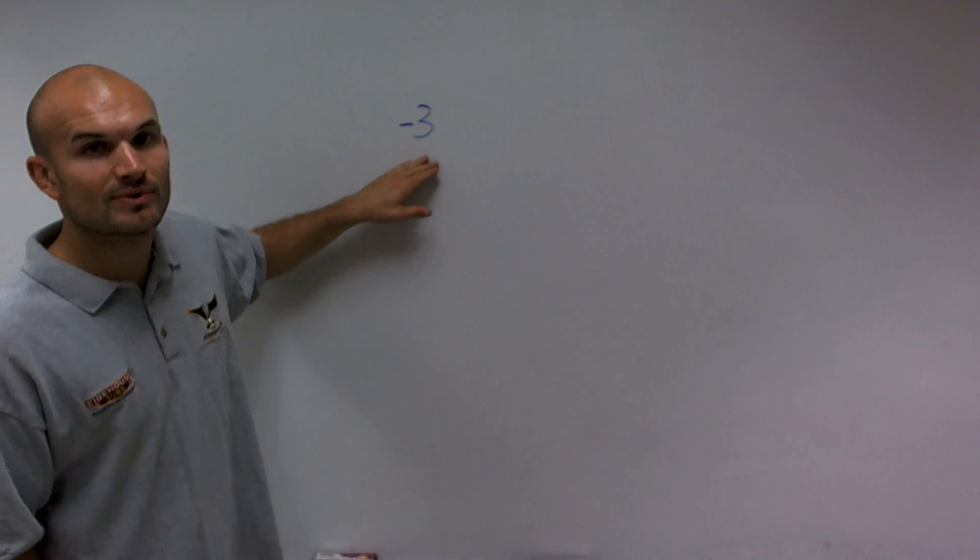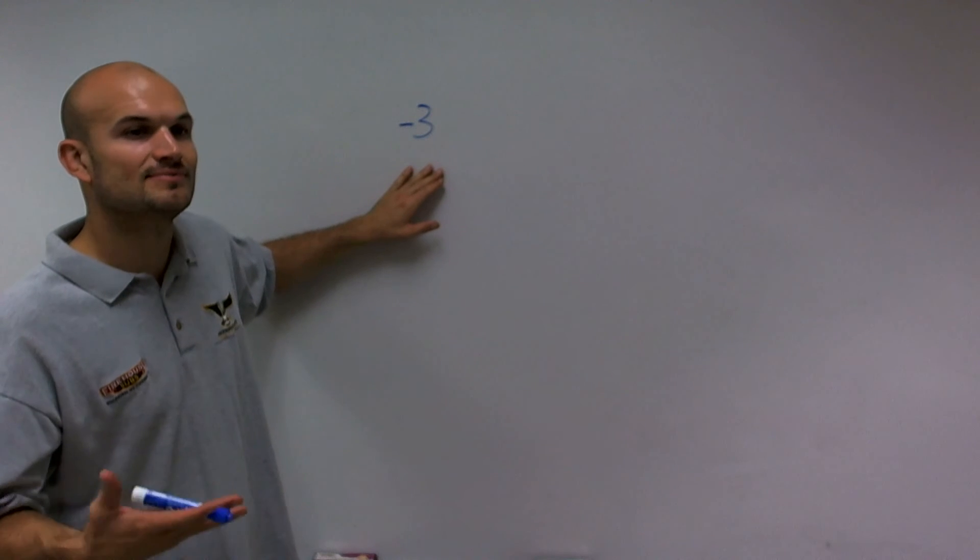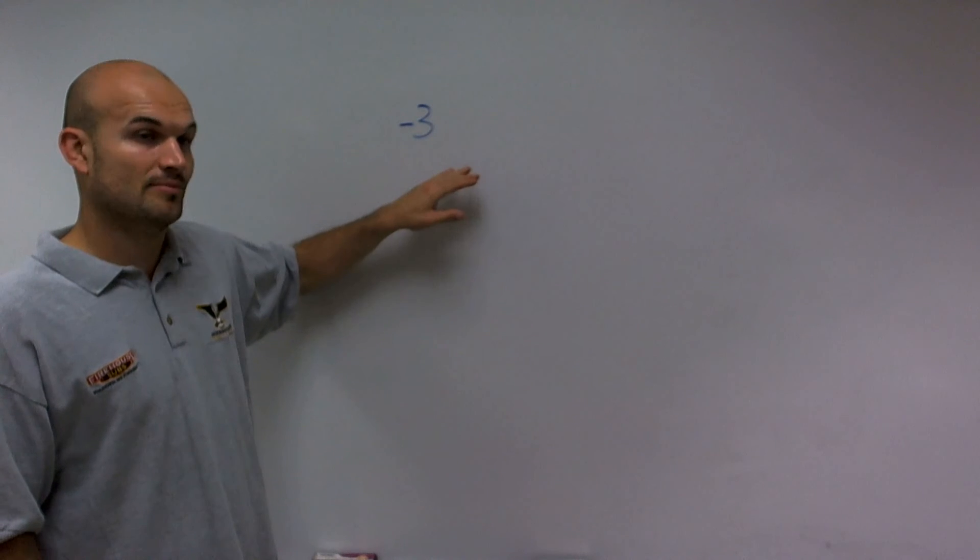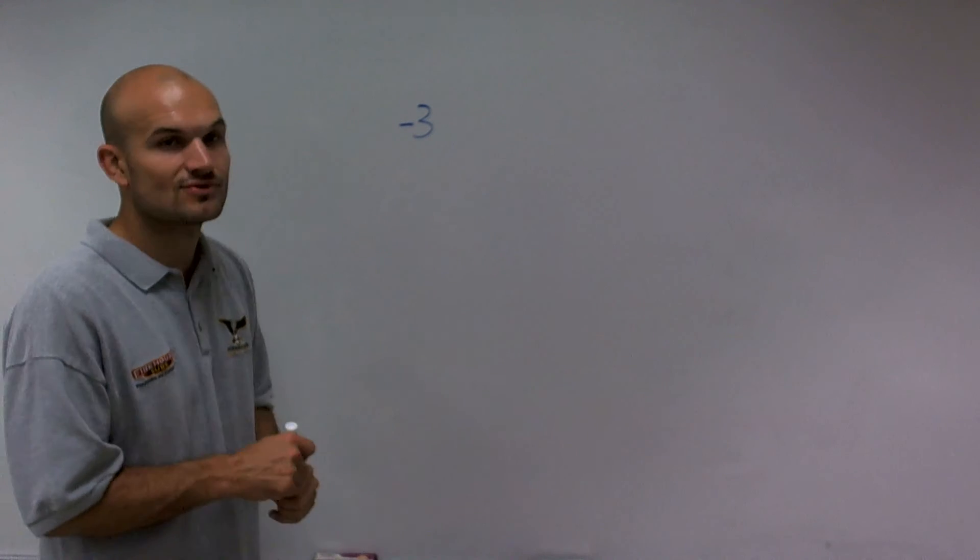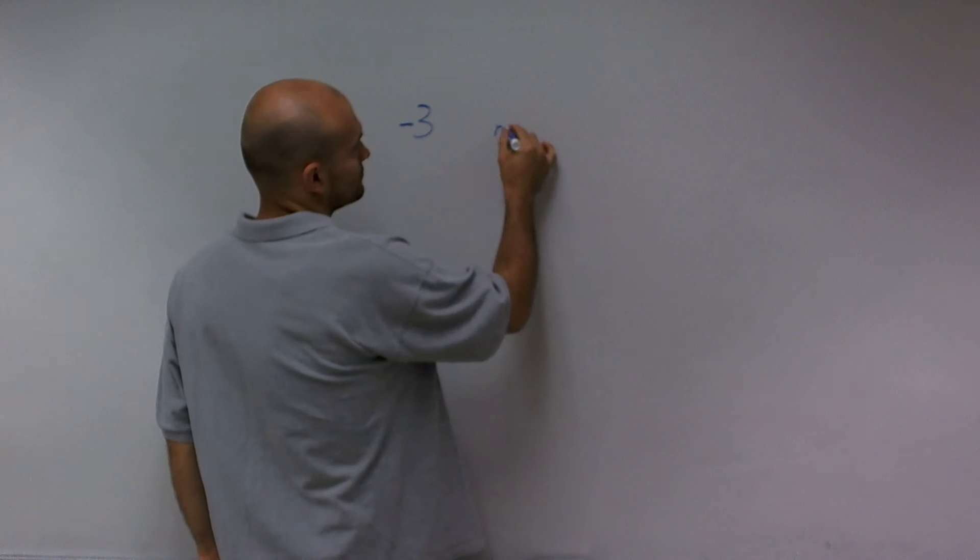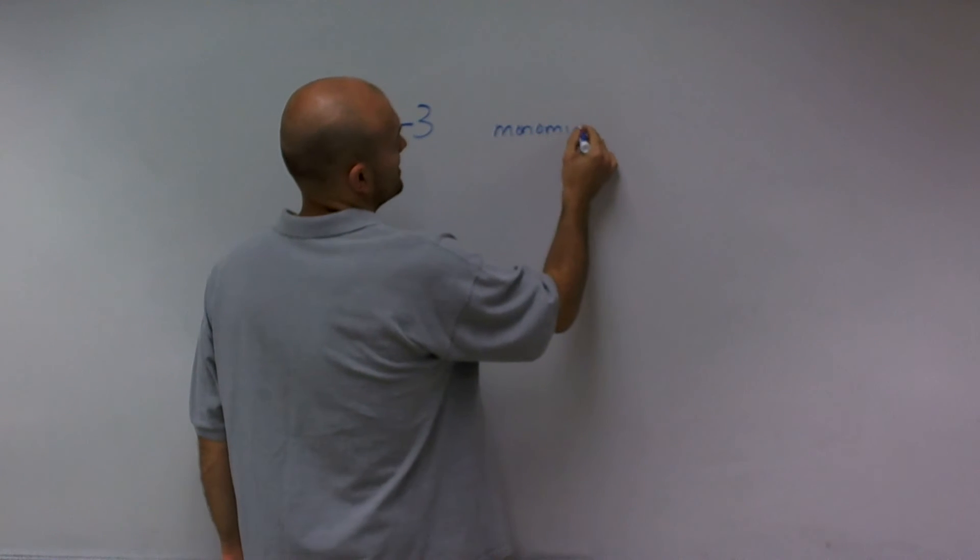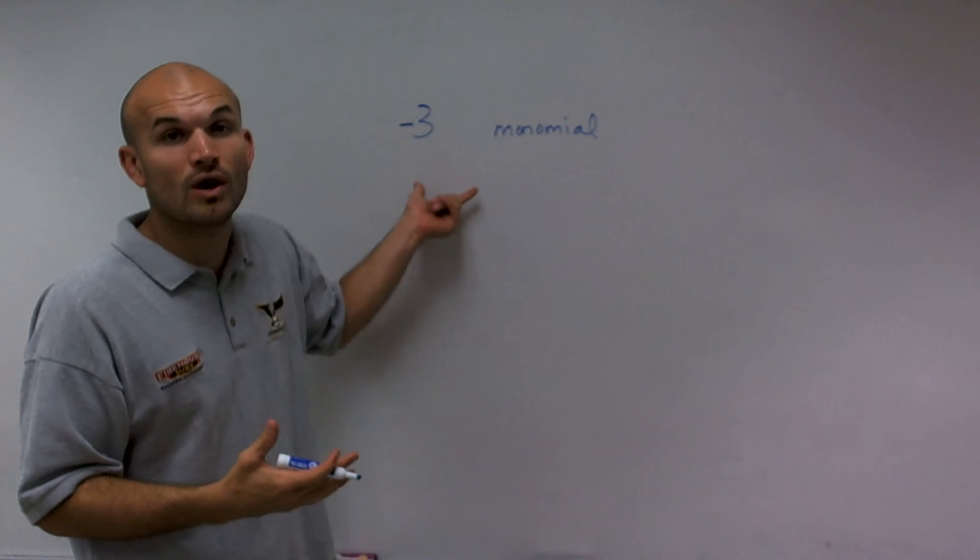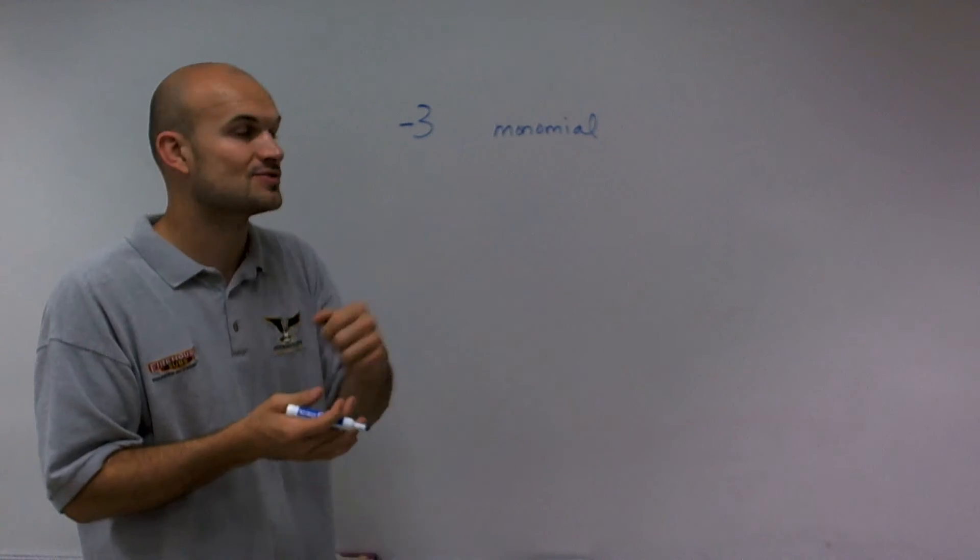When we look at this and apply that definition, a monomial is a number or a variable. This is obviously a number—negative 3. So I know it's a monomial because I'm not adding or subtracting different monomials. There's only one of them; mono represents one.